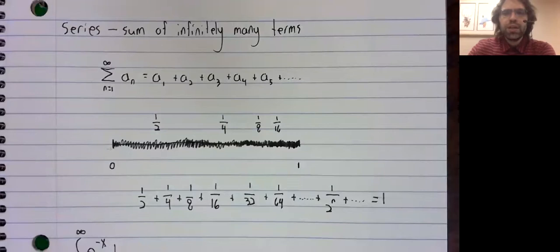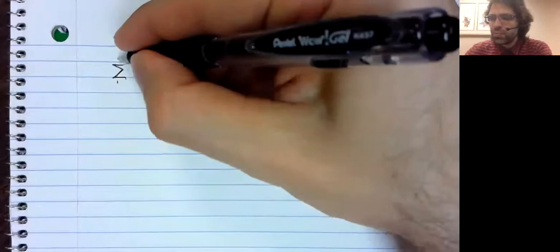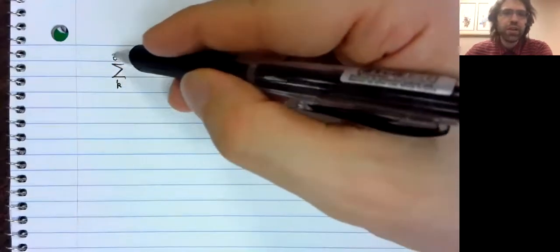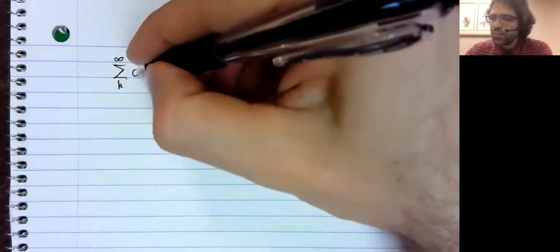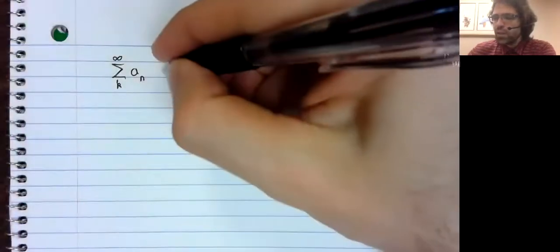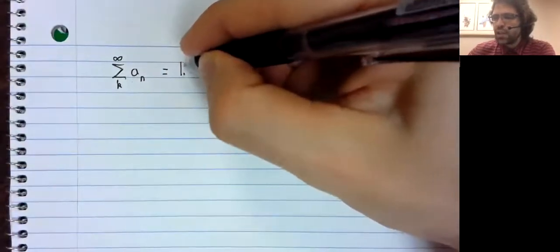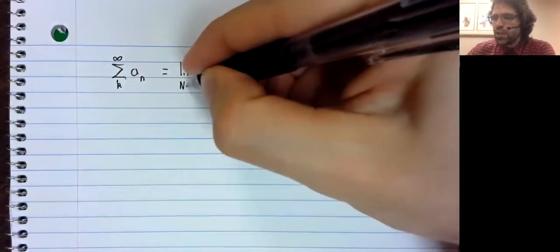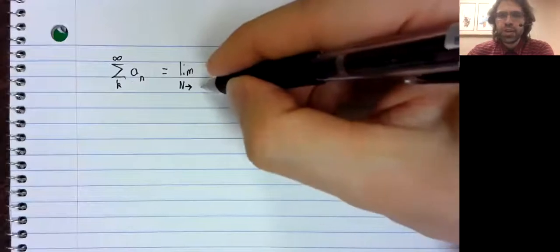How do we define it? With limits, of course, the way we've defined everything else that matters in calculus. We define the limit from some starting value to infinity of this sum, very similarly to the way we define improper integrals.